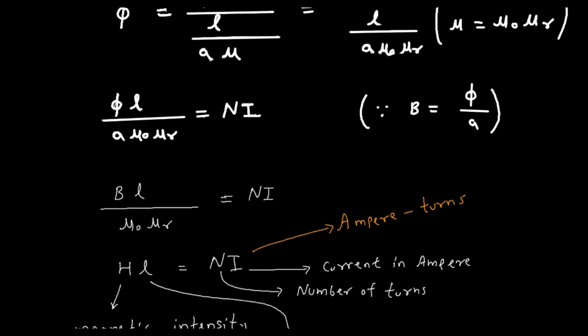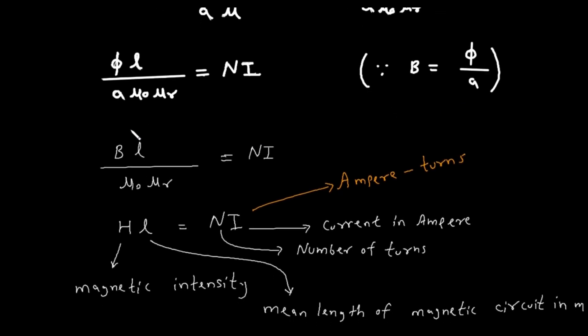Now we also know that b upon mu equals h. So b upon mu, or mu zero into mu r, is magnetic field intensity which is h. So here we can write h into l equals n into i.